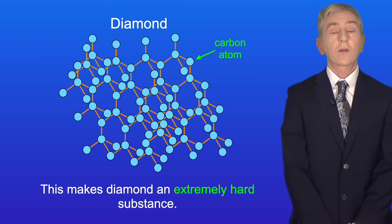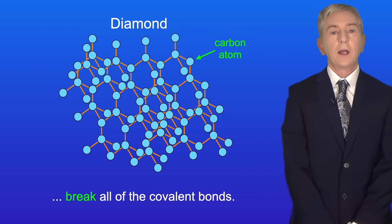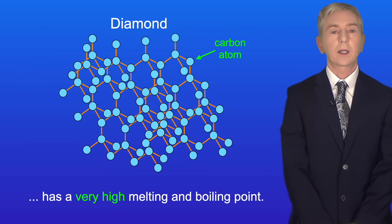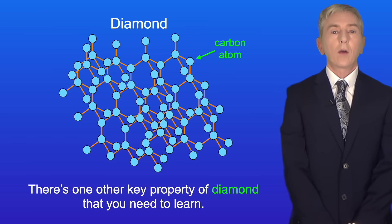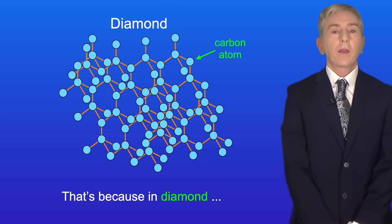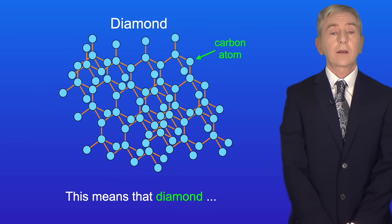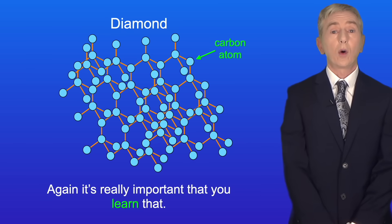This makes diamond an extremely hard substance. If we wanted to melt a diamond we would need to break all of the covalent bonds, which takes a huge amount of energy. So diamond has a very high melting and boiling point — in fact the melting point of diamond is over 3,700 degrees Celsius. One other key property of diamond is that it cannot conduct electricity. That's because in diamond all of the outer electrons are in covalent bonds, meaning diamond has no free electrons to carry electrical charge.